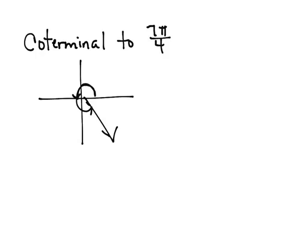Well here's pi. There would be 5 pi over 4, 6 pi over 4, so 7 pi over 4. That's approximately 315 degrees.